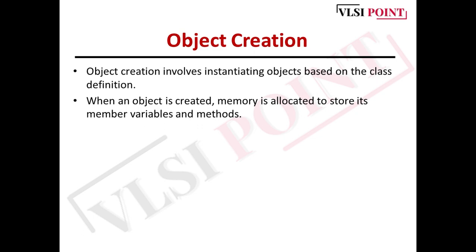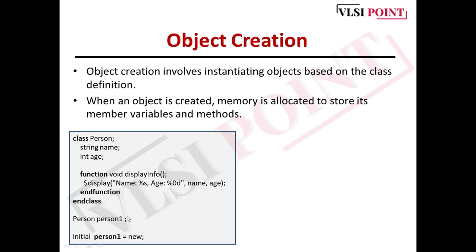Next is object instantiation. Object creation involves instantiating objects based on the class definition. When an object is created, memory is allocated to store its member variables and methods. You can see here the example: class Person with class properties name (string type) and age (integer type). Then we have defined a method, function void displayInfo.